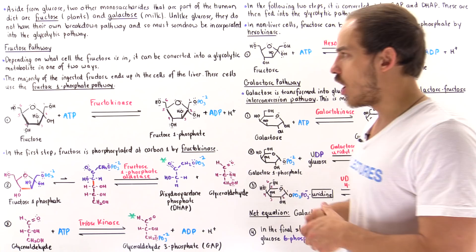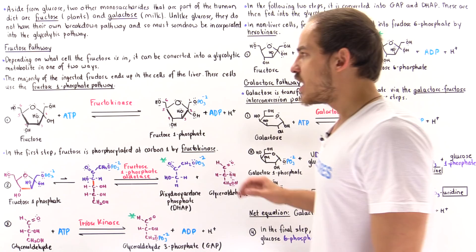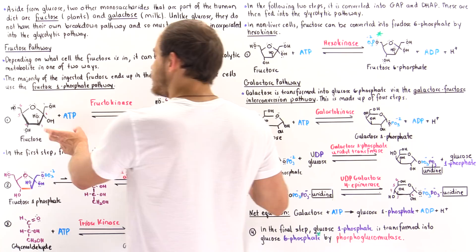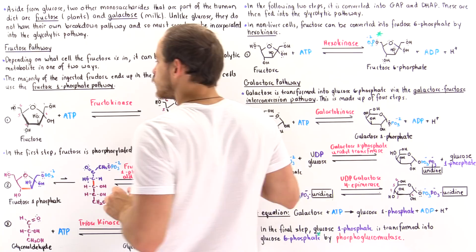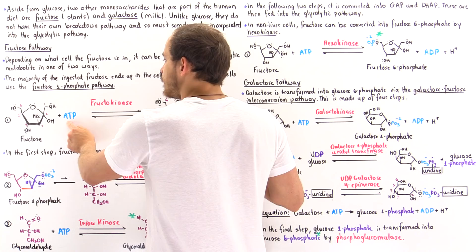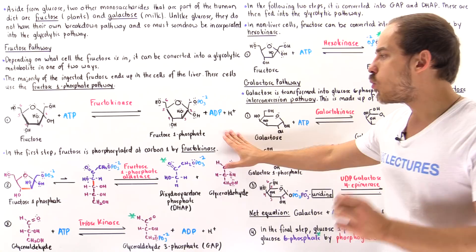In step one of the fructose 1-phosphate pathway, we have an enzyme called fructokinase. Kinase means it phosphorylates, so we need an ATP molecule. The substrate of this enzyme is fructose. Fructokinase uses ATP to phosphorylate carbon number 1 of fructose, and we form fructose 1-phosphate, along with ADP and H+.